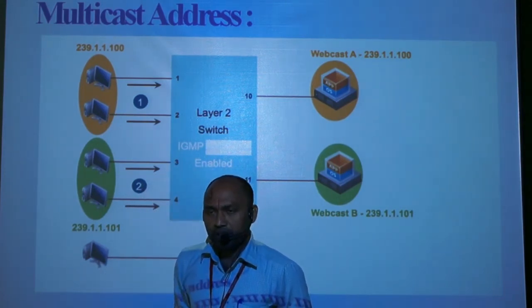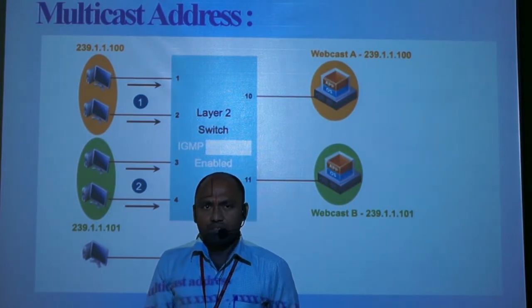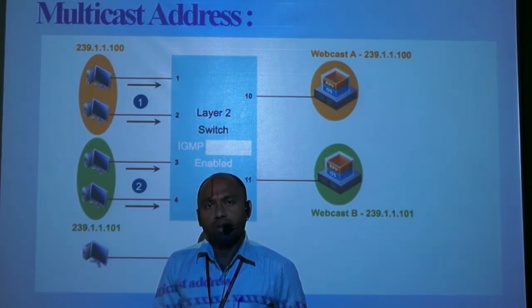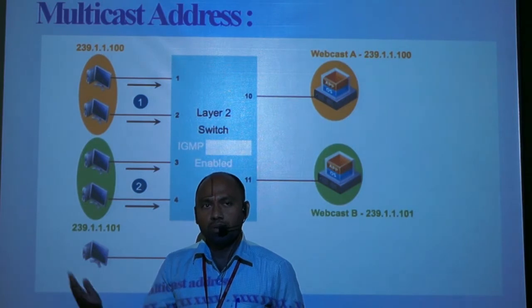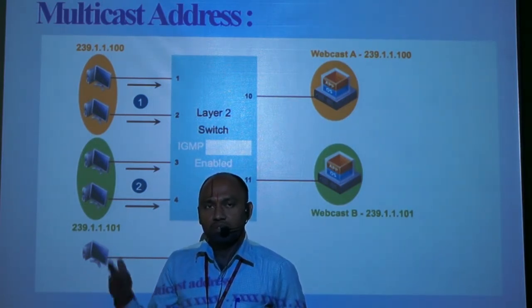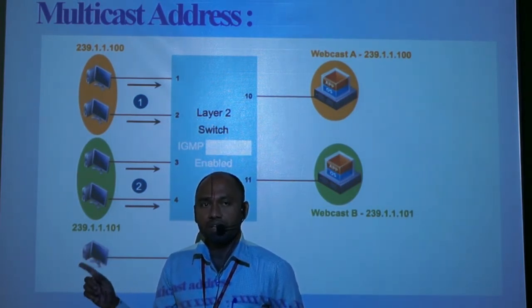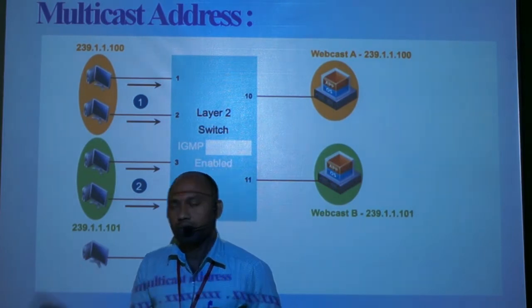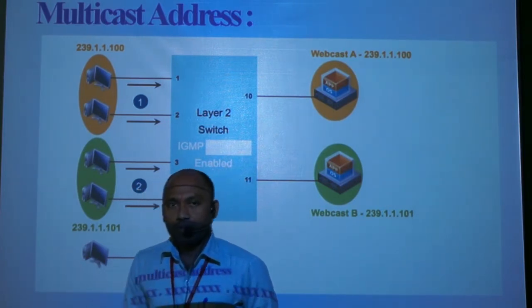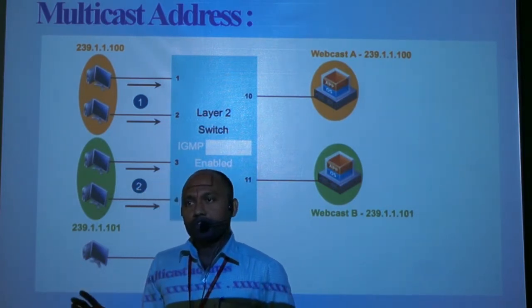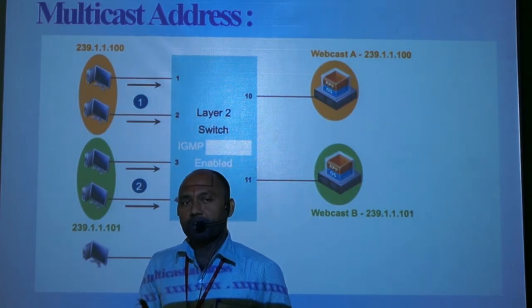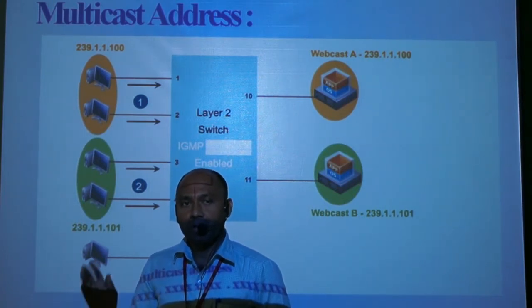In decimal representation, the number starts from 224 to 239. In binary notation, the address begins with the default bits 1110, followed by a combination of 1s and 0s. The remaining 28 bits give a total field value of 255. If 16 is subtracted from 255, we get 239. These addresses are widely used to differentiate multicast addresses from unicast addresses.